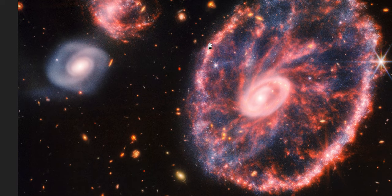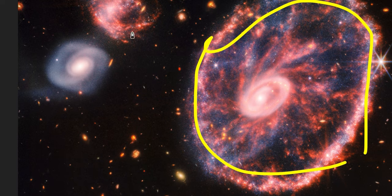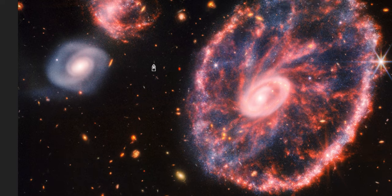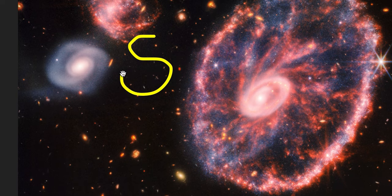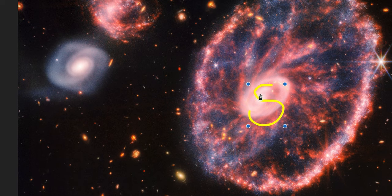This new image of the Cartwheel galaxy, as seen by NASA's James Webb Space Telescope, offers not just a snapshot of the galaxy's current state but also a peek into its past and future. We believe this galaxy started as a spiral galaxy before it collided with smaller galaxies hundreds of millions of years ago.